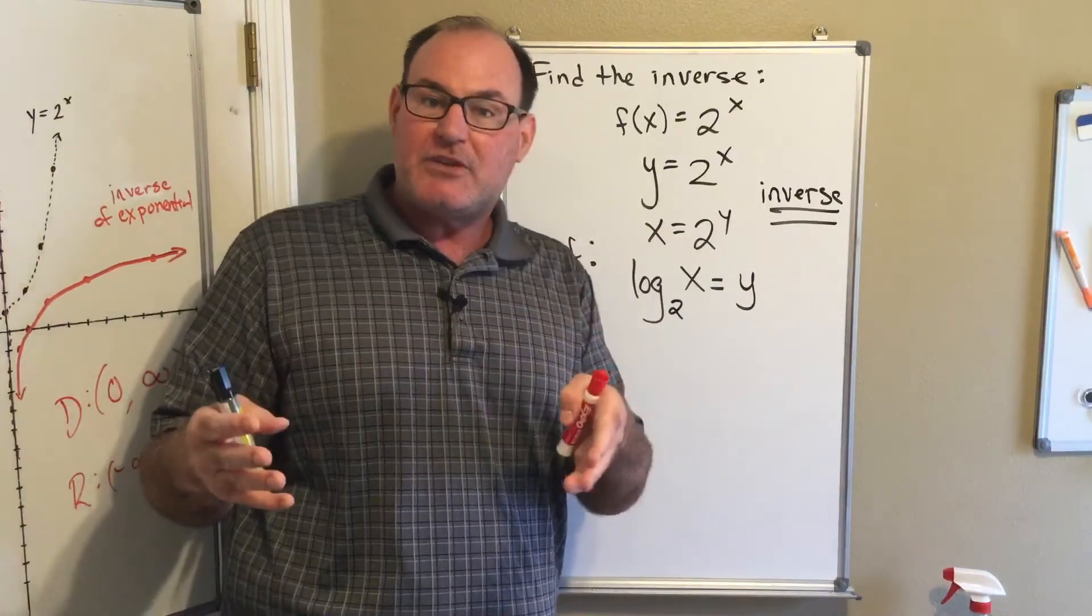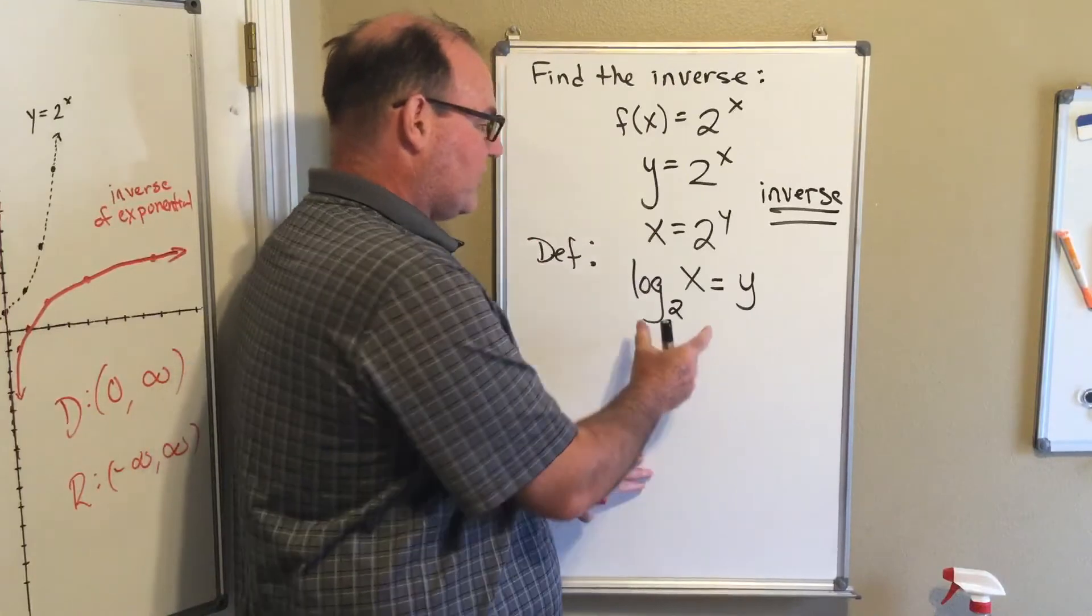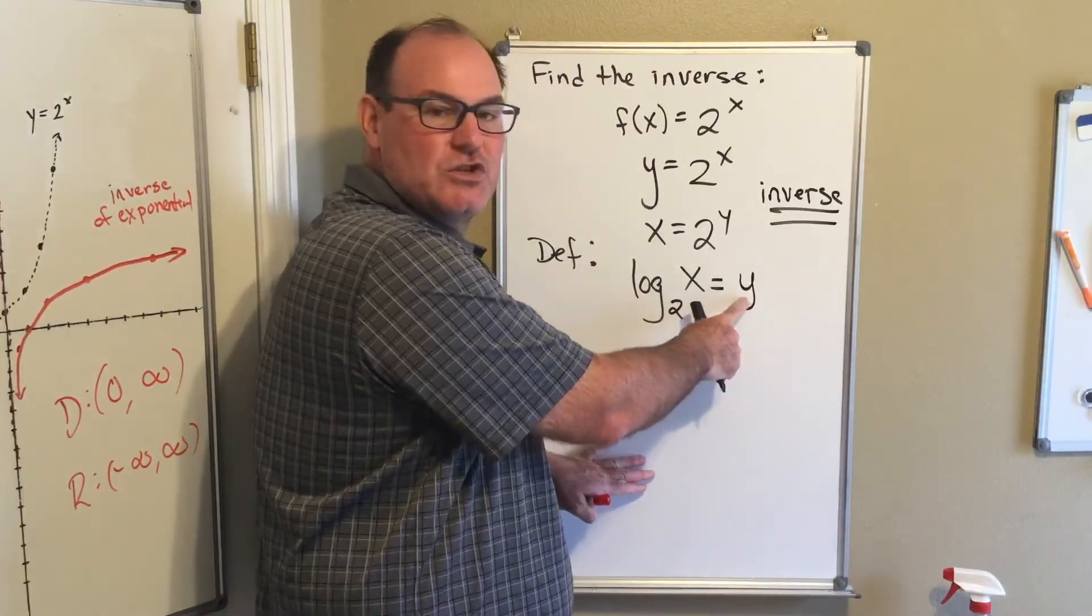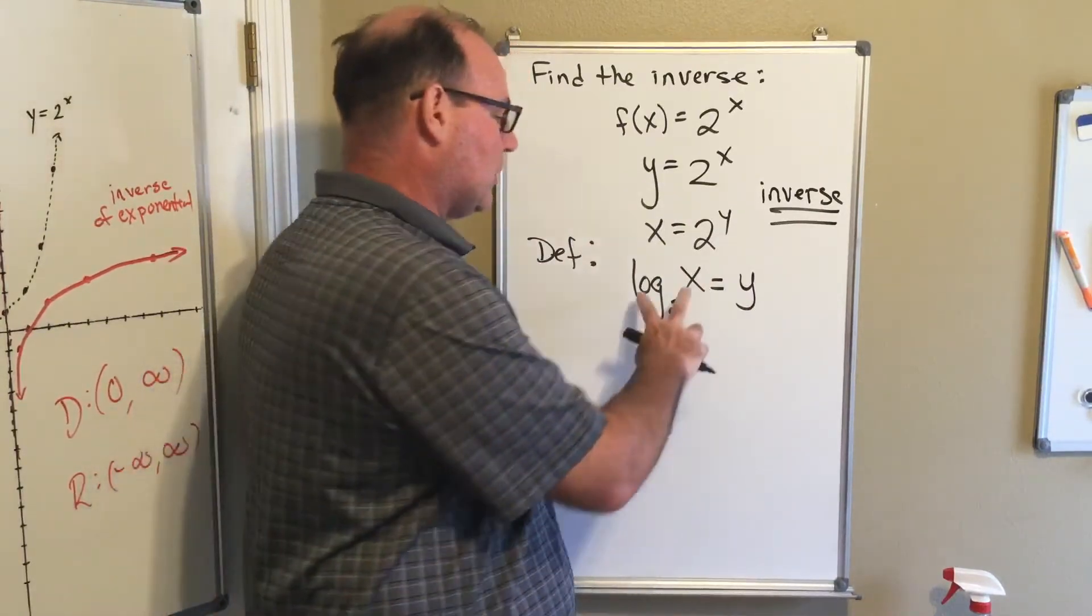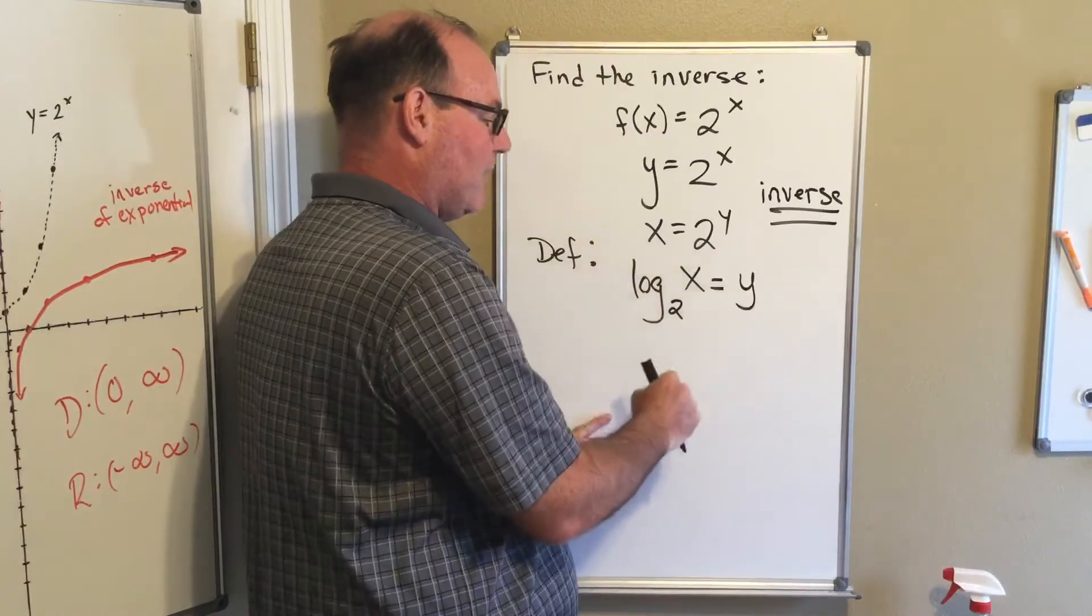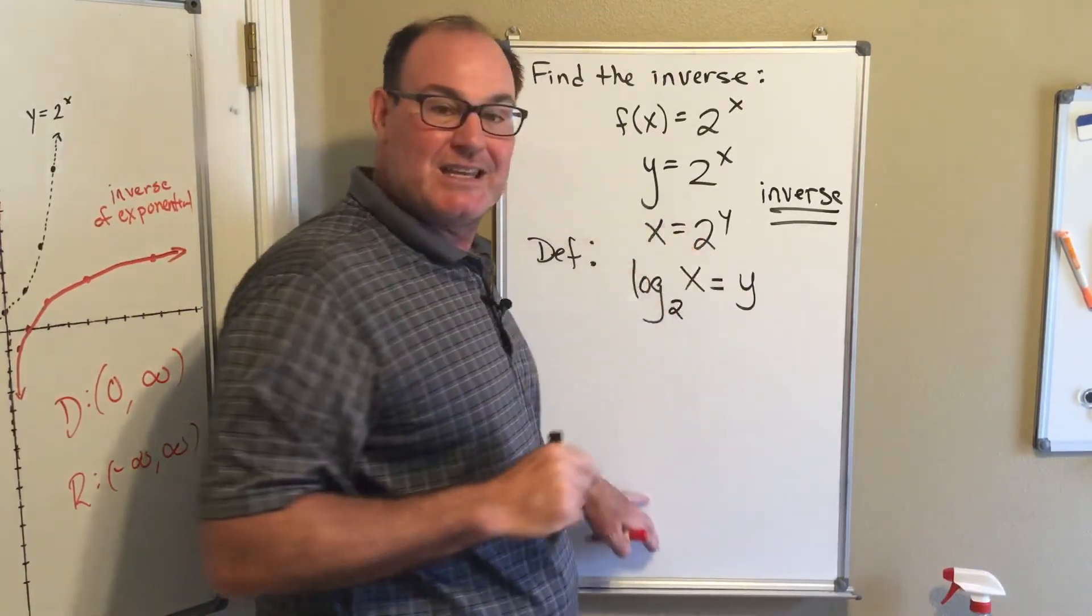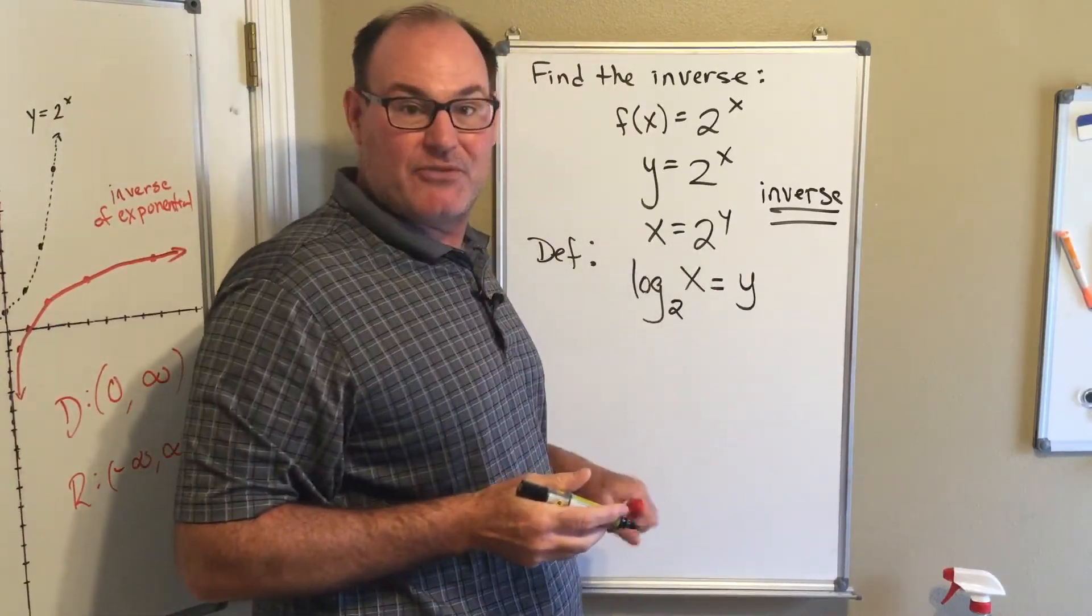I'll rewrite the definition in a minute, but notice the terminology. The logarithm—log base 2 of x—is always equal to a power. Make a note: the logarithm always equals the power. This number, this 2, is called the base, just like in the exponential statement. And x is the thing that's left over.